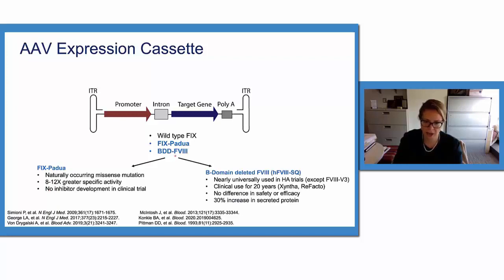For hemophilia A, to meet AAV packaging constraints, all AAV vectors use a truncated version of Factor VIII, which is most classically the B domain deleted version of Factor VIII that's used as Factor VIII SQ. There is a single trial that's using another variant of a truncated version of Factor VIII.